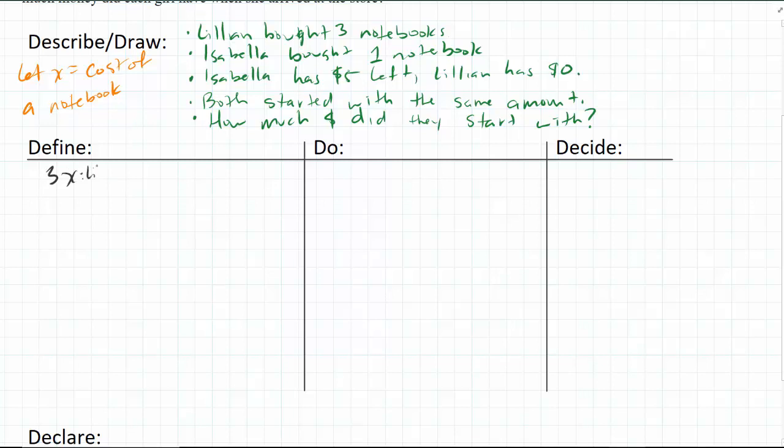Lillian, I should have put that first. Okay, and then Isabella is going to be one notebook cost, which is x, but she also had five dollars left. So my strategy is to figure out how much they spent and see if it's equal to each other. And this is Isabella.